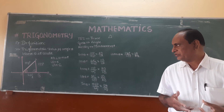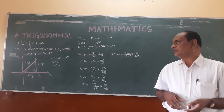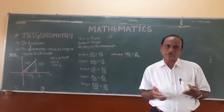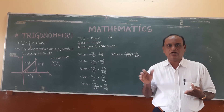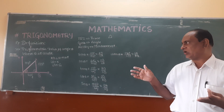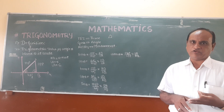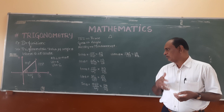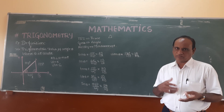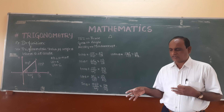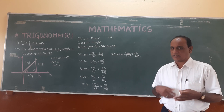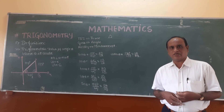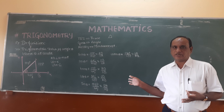Trigonometric ratios of an angle theta, where theta is an acute angle: six trigonometric ratios are — sin theta equals opposite divided by hypotenuse; cos theta equals adjacent divided by hypotenuse; tan theta equals opposite divided by adjacent; cot theta is the reciprocal of tan theta; sec theta is the reciprocal of cos theta; cosec theta is the reciprocal of sin theta.